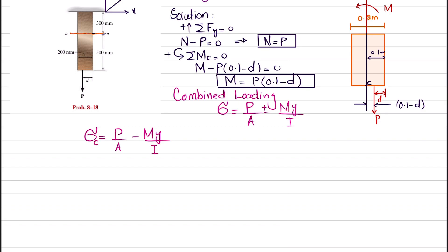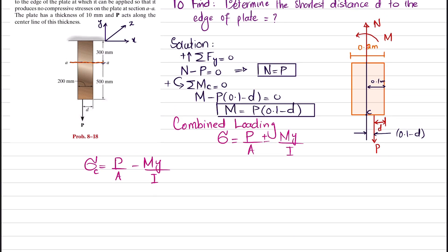Due to this loading, the plate will bend. The condition is to select distance D such that the compressive stress equals zero. So we put zero equals P/A minus MY/I.